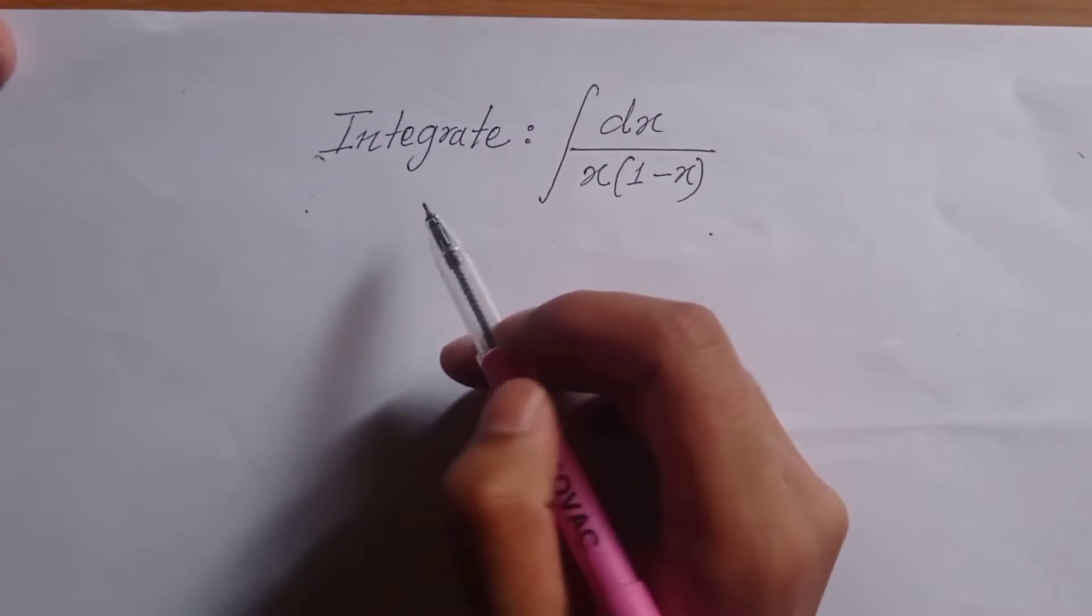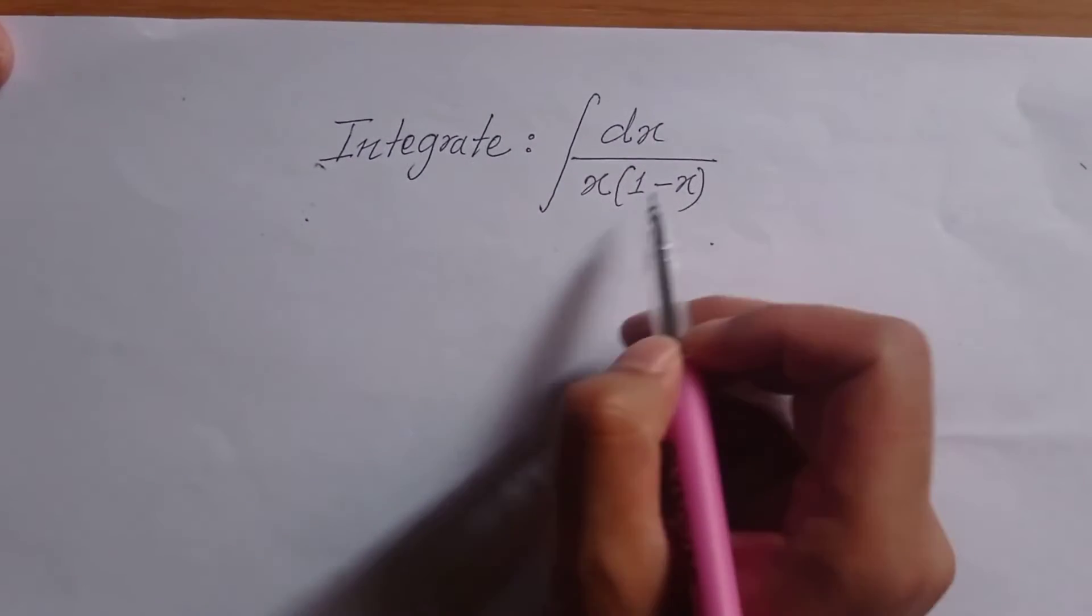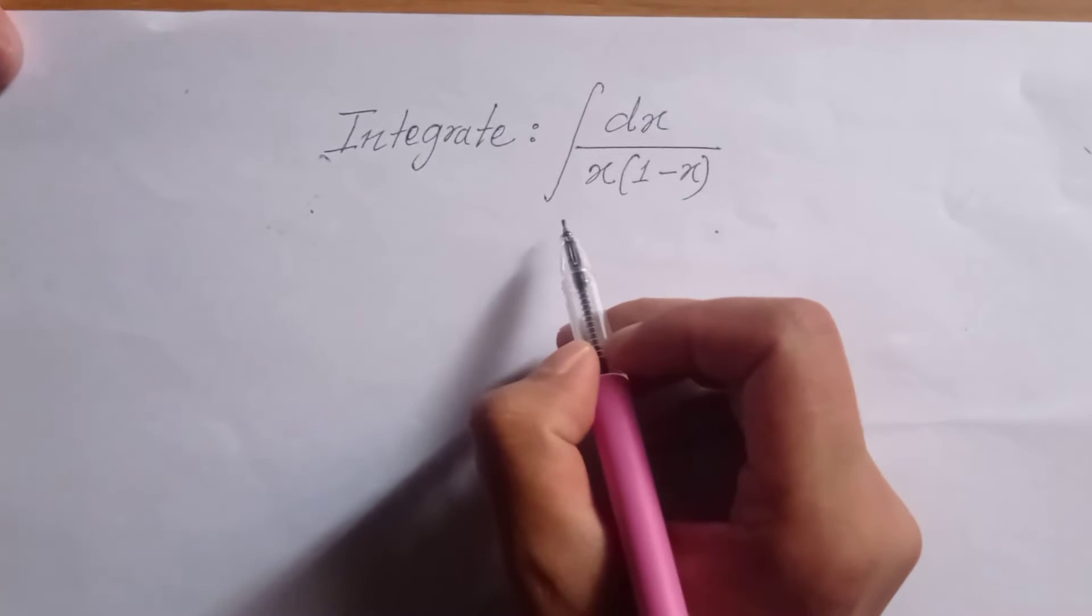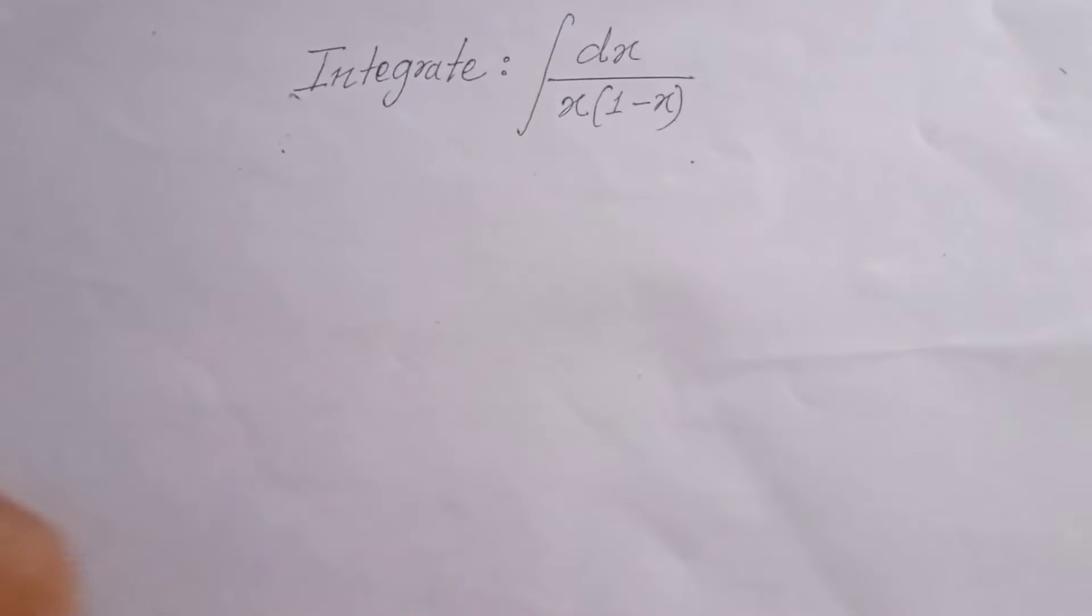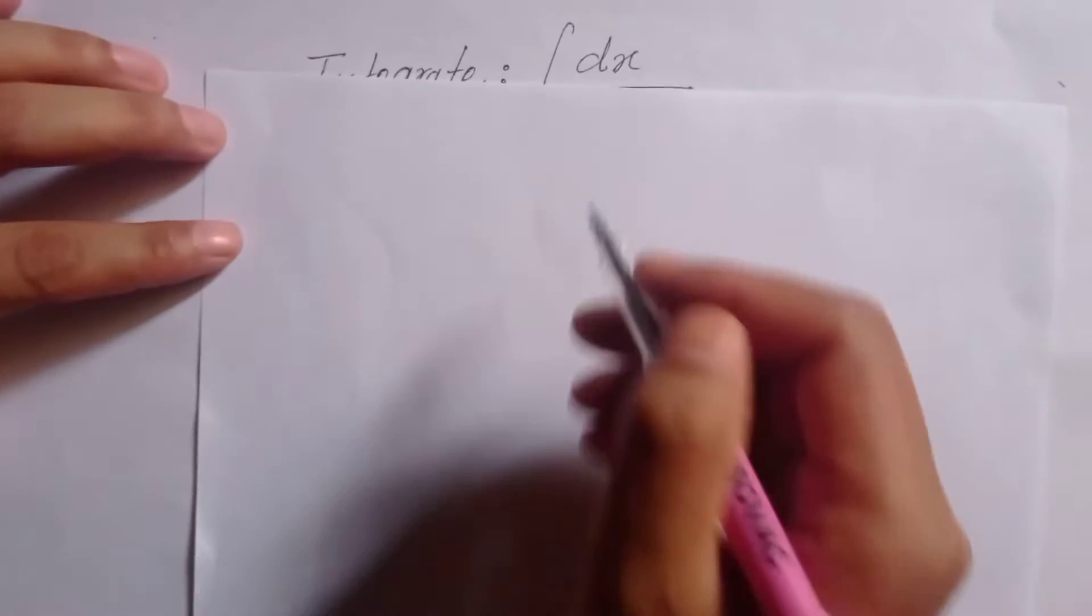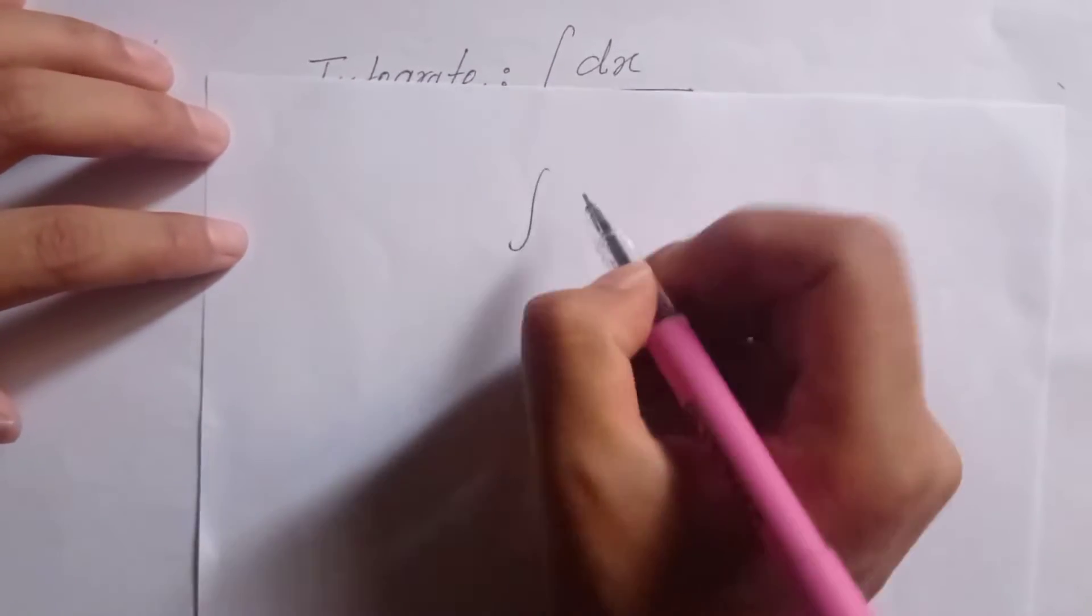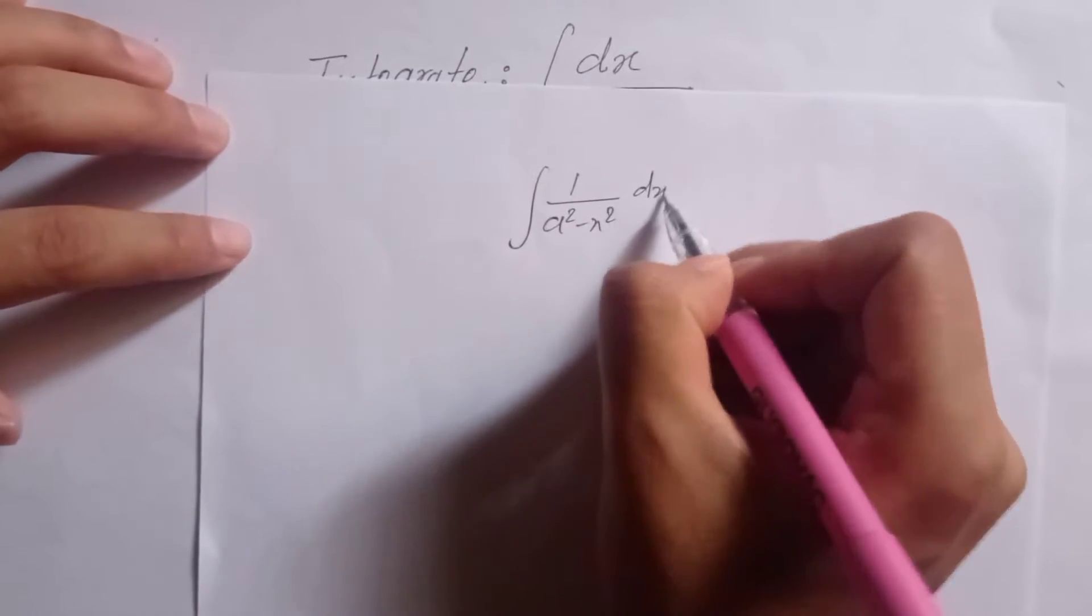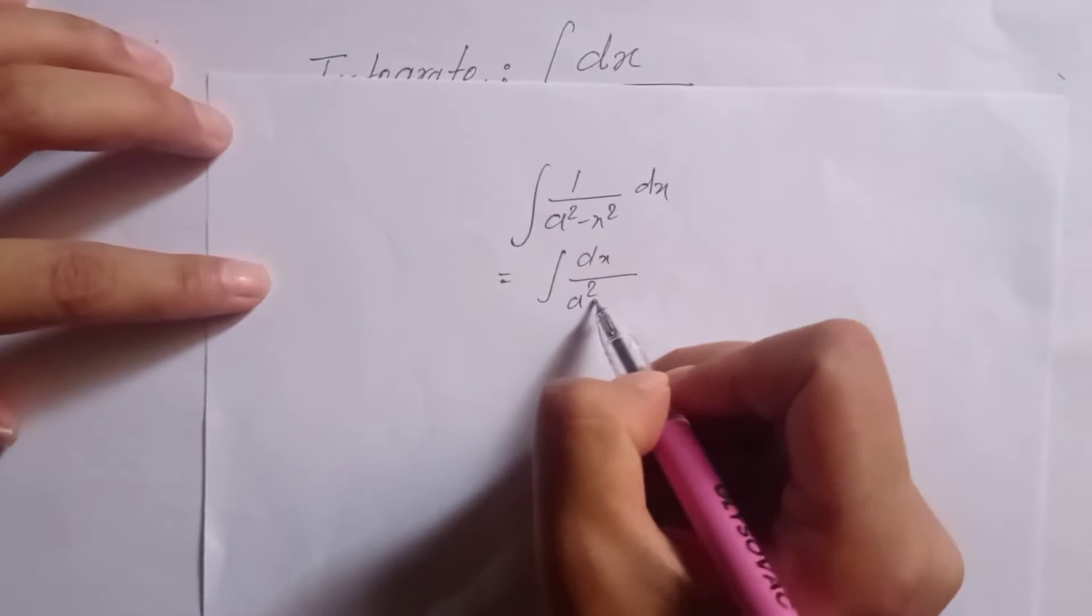The question is: integrate dx by x times 1 minus x. This is the integration of 1 by a squared minus x squared dx.